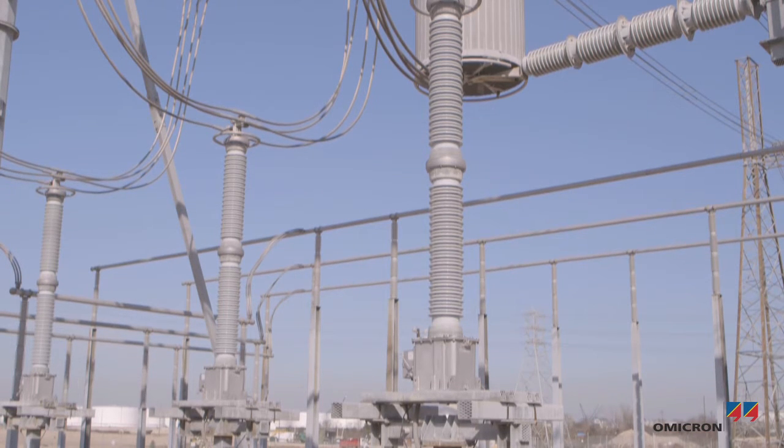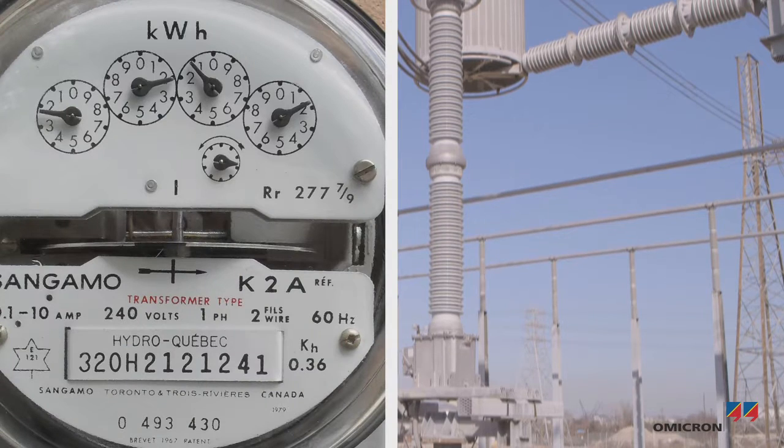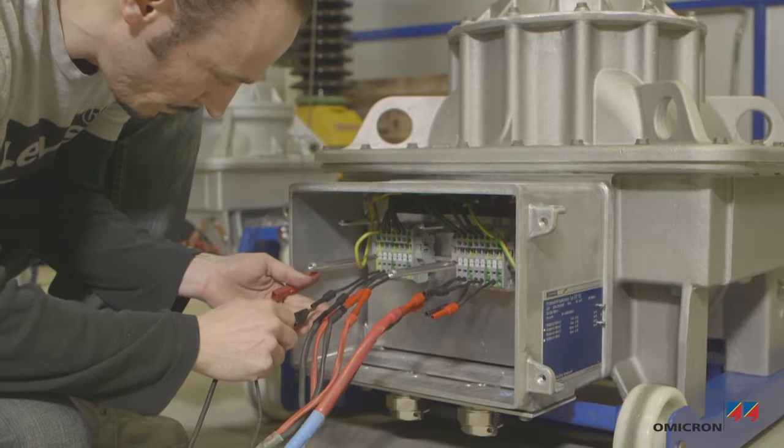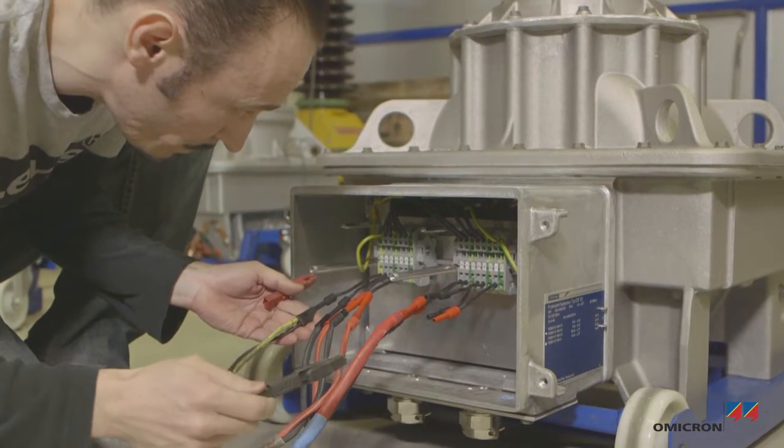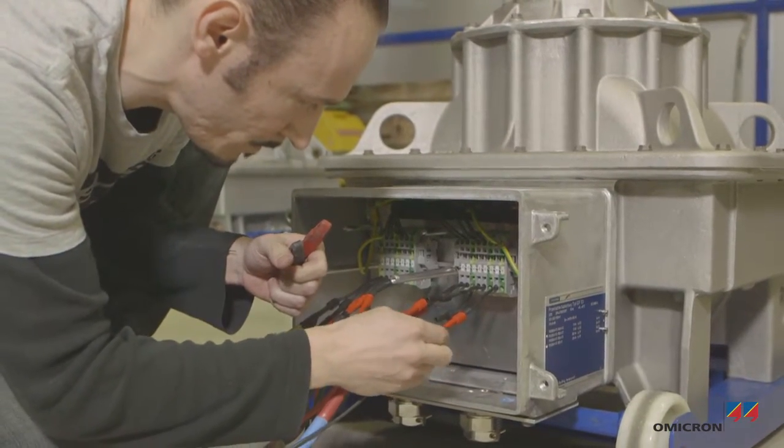Potential transformers or voltage transformers must accurately reflect system conditions for revenue metering, protection, load control, or similar applications. Calibrating a voltage transformer means determining its accuracy and respective error according to the applicable standard.